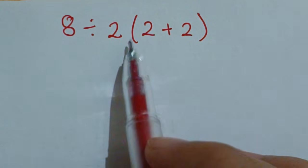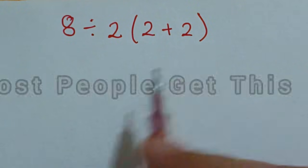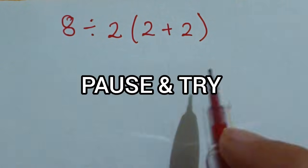Solve this: 8 divided by 2 bracket 2 plus 2. Most people get this wrong. Pause and try.